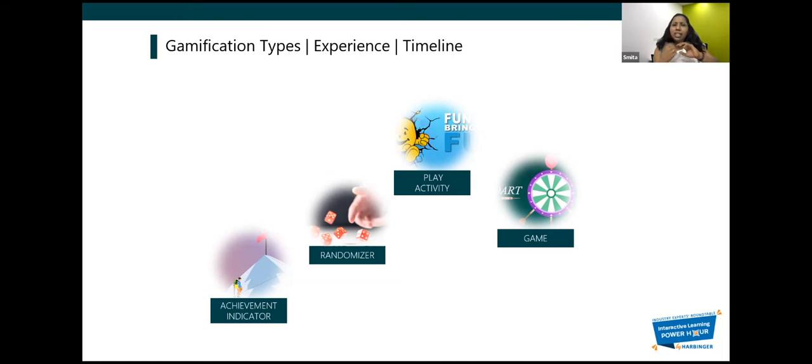The third is randomizer. We all know we like to test our luck factor through the game, which is like randomizer games which are very simple like dice, truth and dare, or spin the wheels. If we use that as a base, then this is the third way of doing the gamification on top of it.